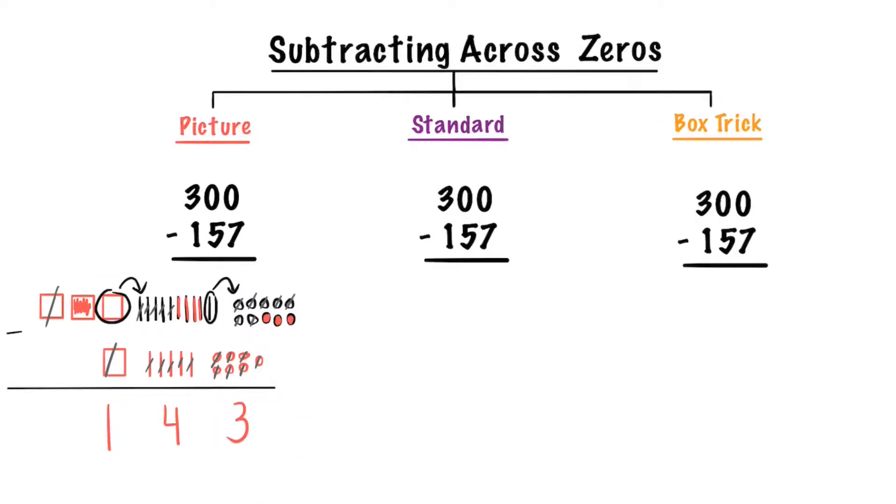Let's subtract 300 take away 157 the standard way. Since we don't have any ones we have to borrow from the tens, but we don't have any tens either so we have to go all the way to the hundreds place. So now we're going to borrow one of those hundreds and we're going to be left with two hundreds.